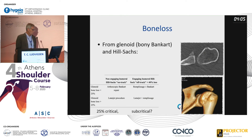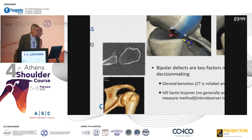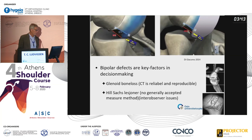From glenoid bony Bankart and Hill-Sachs, it's important to consider both of them. There is ongoing debate about what is the critical amount of bone loss on the glenoid side and what is the critical amount of bone loss on the humeral side.